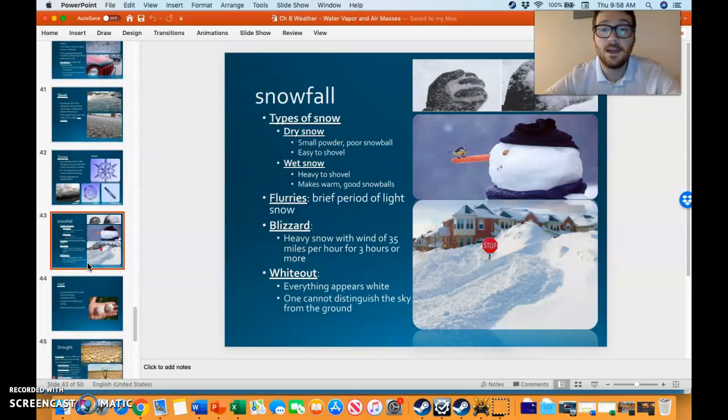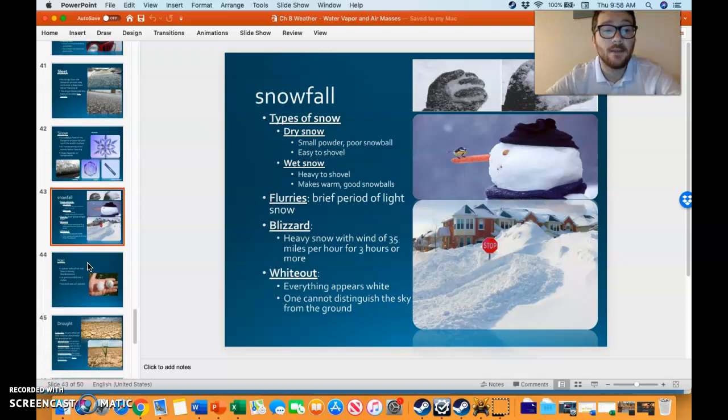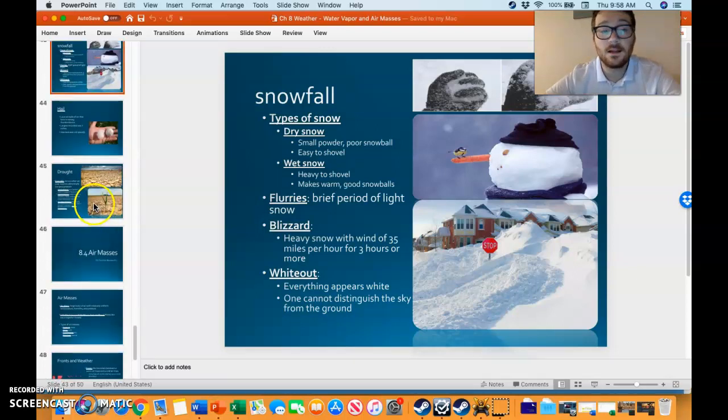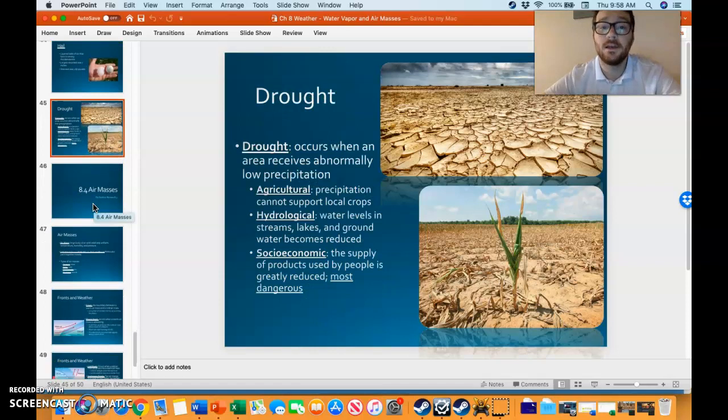You can have anything from a little flurry, which is nothing to worry about, to a whiteout where one cannot even distinguish the ground from the sky. Sometimes there's not much precipitation and a drought occurs. There are different types of droughts, from agricultural to socioeconomic, where everyone's lives are affected by the drought.